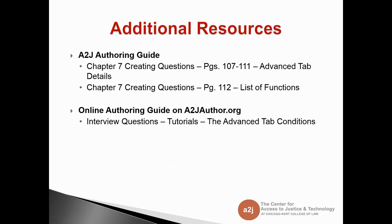Additional resources: we have our A to J Authoring Guide downloadable on AtoJAuthor.org. Chapter 7 deals with advanced tab details and also lists the functions — so if you wanted a cheat sheet, you could go there. We also have an online authoring guide on the AtoJAuthor.org website with tutorials on the advanced tab. Now let's take a look at the software.